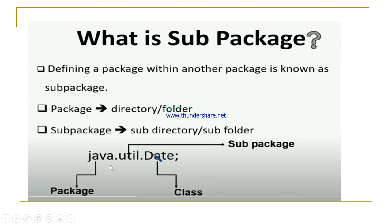For example, java.util.Date — here Date is a class, util is a sub-package of the main package Java, and Java is the main package. So one folder is created named Java, under that another folder is created named util, and after that the class file is created inside it.